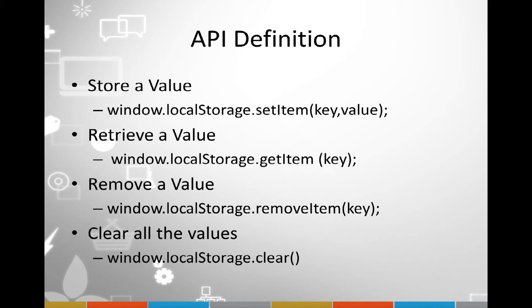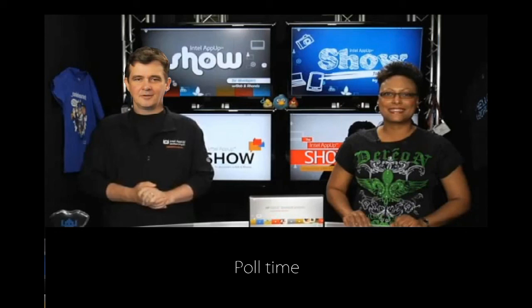You may want to take a screenshot of that API definition slide. The code shown was just error handling to check whether the WebKit supports it. One interesting point: a cookie only allows four kilobytes of information, but local storage gives you five megabytes — quite a difference. Also, users can disable cookies on a web browser but that's not true with local storage, so you can still retrieve data. That's the advantage over cookies.